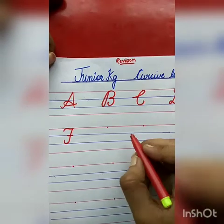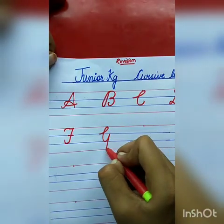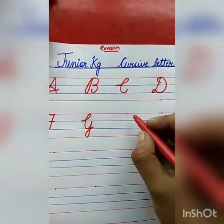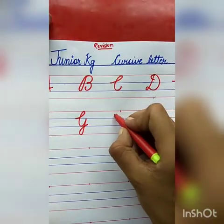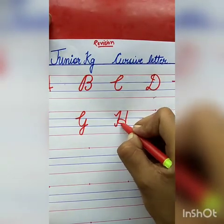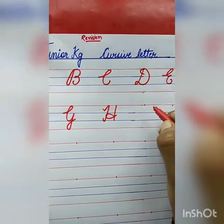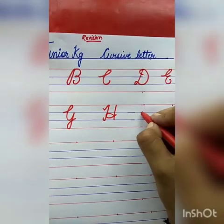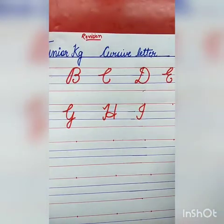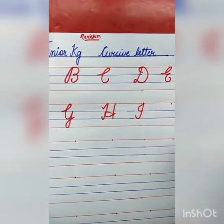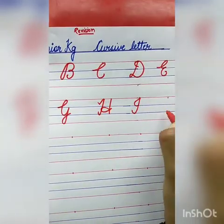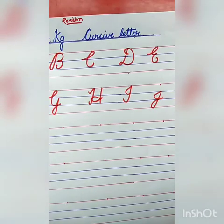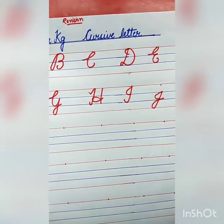Now tell me the next letter. G for grapes. The spelling of grapes: G-R-A-P-E-S, grapes. Now the next letter is H for house. The spelling of house: H-O-U-S-E, house. Now the next letter is I for igloo. The spelling of igloo: I-G-L-O-O, igloo. Now the next letter is J. Curve, slanting line, curve line. J for joker. The spelling of joker: J-O-K-E-R, joker.